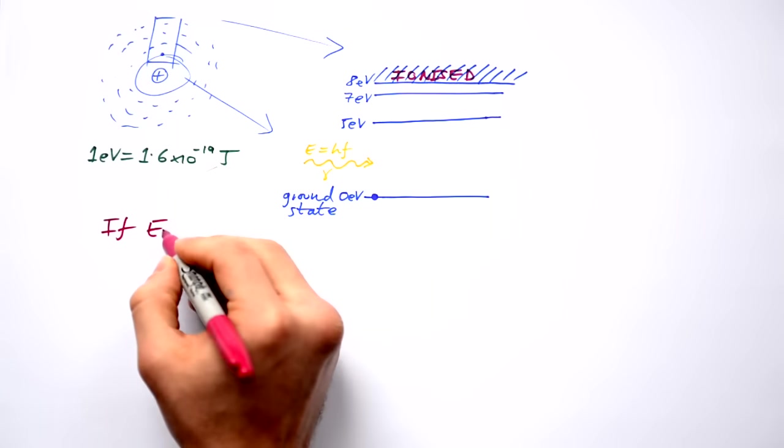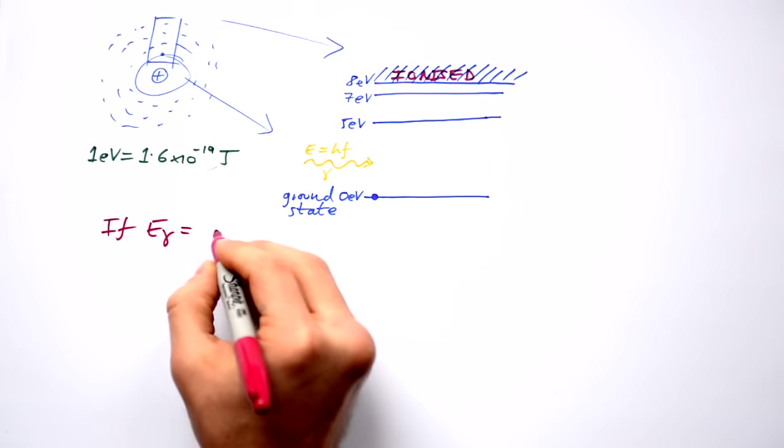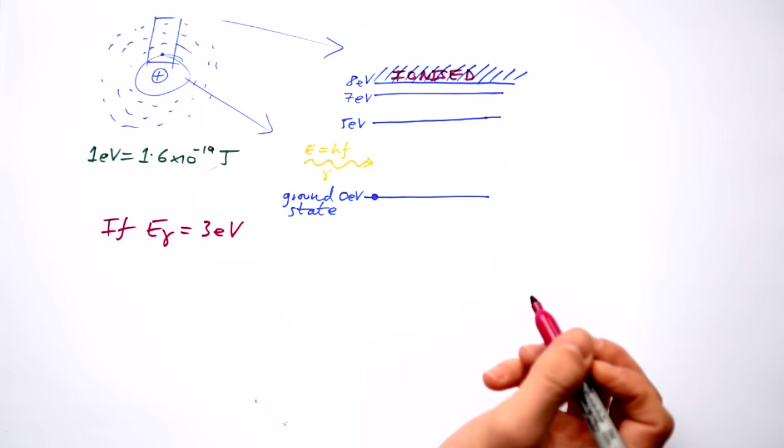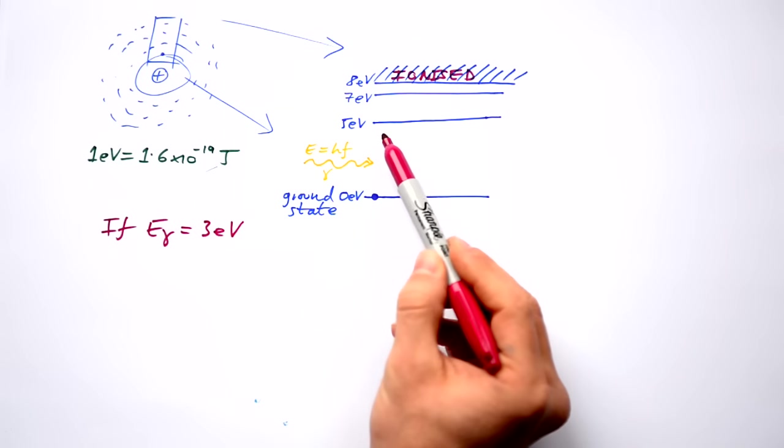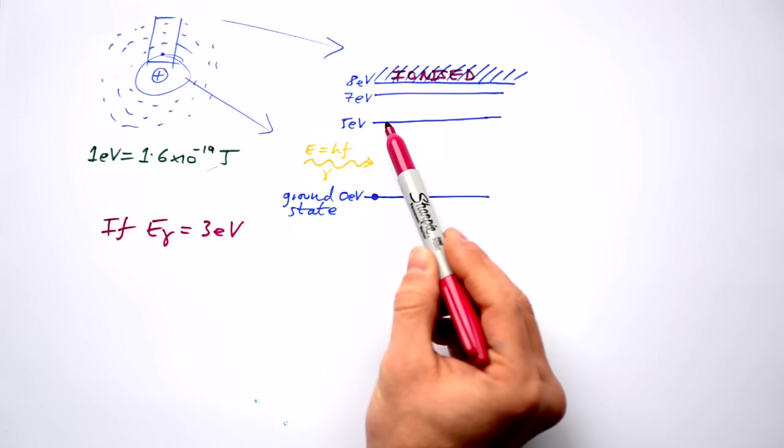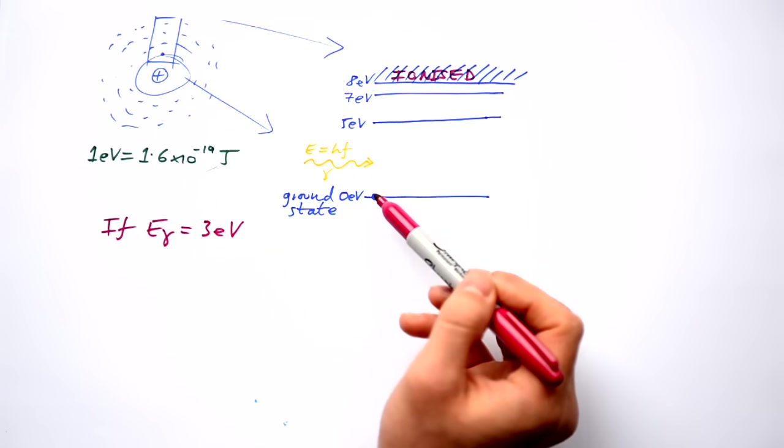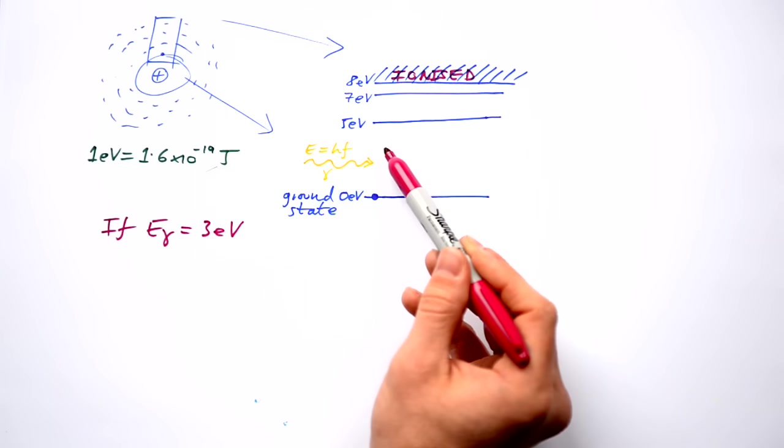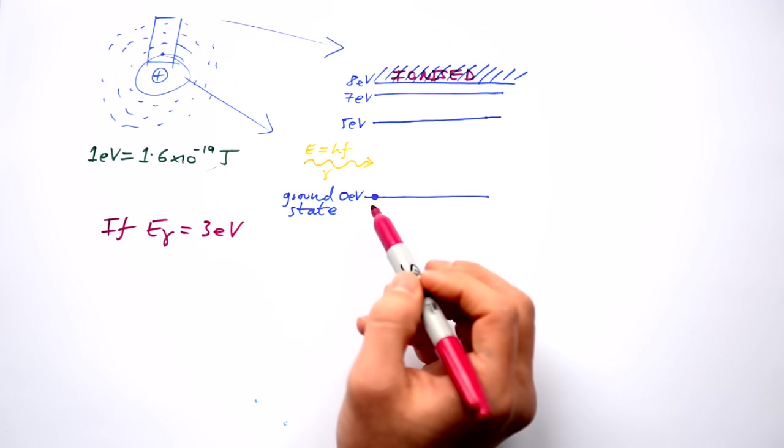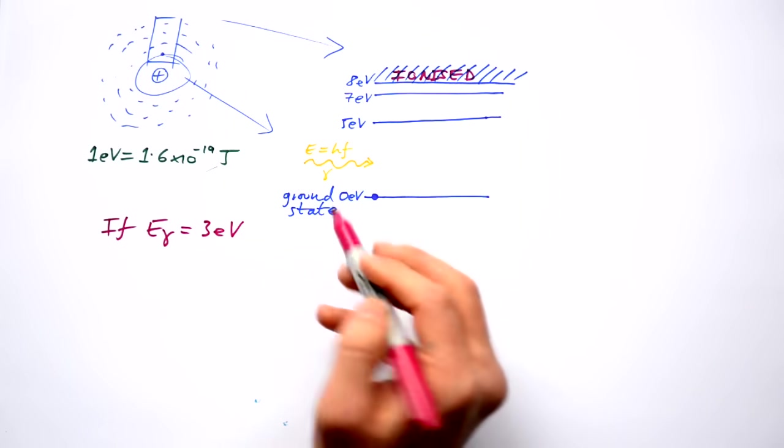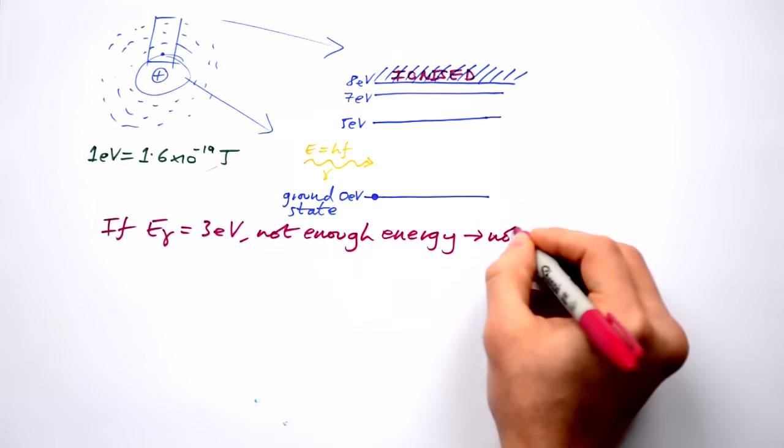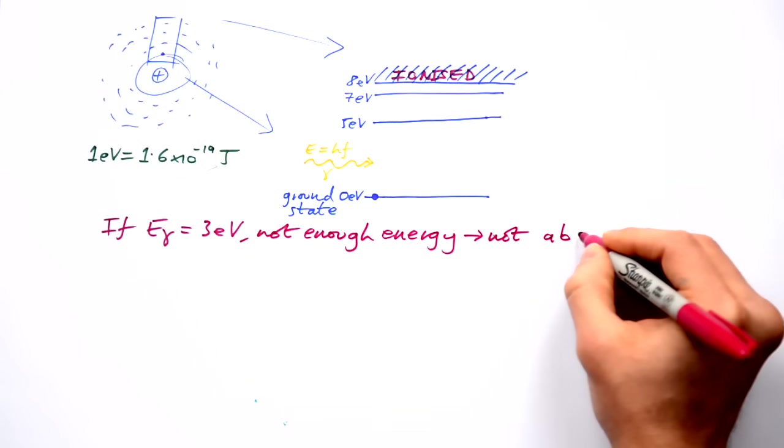If the energy of the photon equals three electron volts, it's not enough energy to get the electron to its next energy level. So it's not like the photon is absorbed and the electron goes part way to this five electron volts. It can't do that. Instead, the photon would just pass straight through. So that means that it's not absorbed.